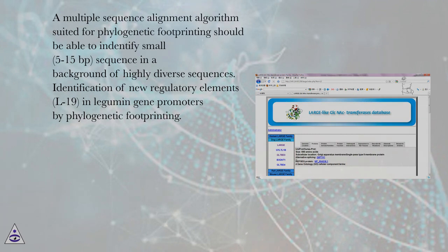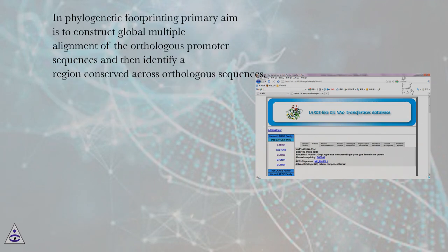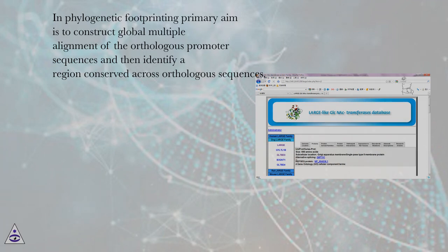Identification of new regulatory elements in legume gene promoters by phylogenetic footprinting. In phylogenetic footprinting, the primary aim is to construct a global multiple alignment of the orthologous promoter sequences and then identify regions conserved across orthologous sequences.